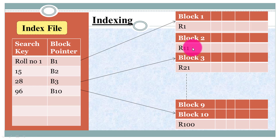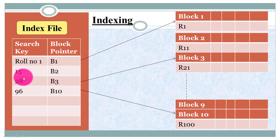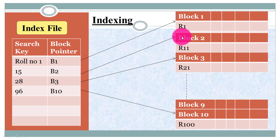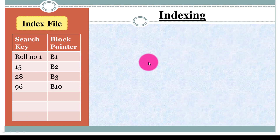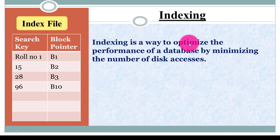For example, block B2 stores records with roll numbers 11 to 20. If I search for roll number 15, the block pointer does not point directly to 15 but points to the address of block B2, where 15 is stored. After reaching that block, the record is searched easily. So the index file contains these two fields.